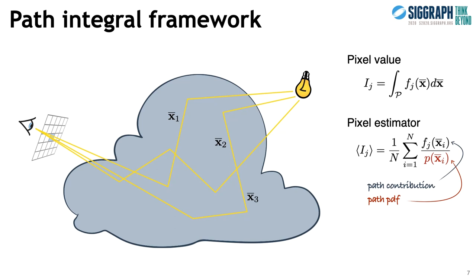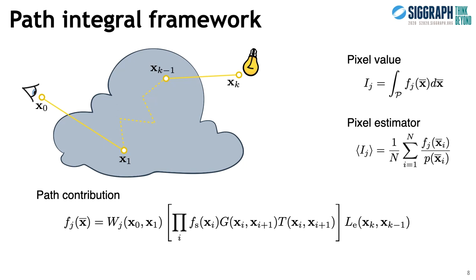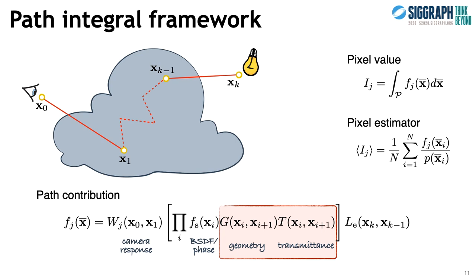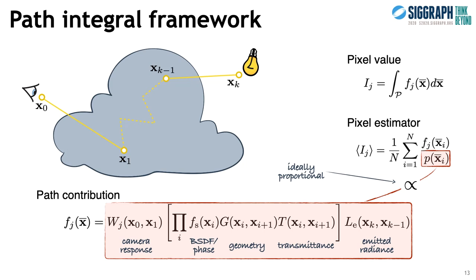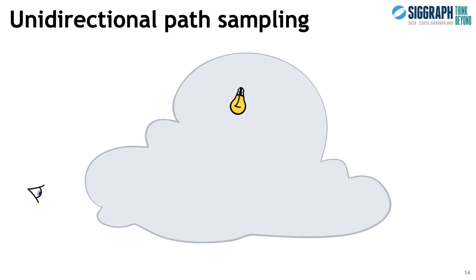The contribution of each possible path is a product of a few terms: the camera sensitivity to light, the BSDF or phase function at each interior path vertex, the mutual orientation and transmittance between subsequent path vertices, and the emitted radiance at the last vertex. To minimize the variance of the resulting estimator, importance sampling theory postulates the use of a PDF proportional to the path contribution function. But this is very difficult in practice due to the complex, scene-dependent shape of this function.